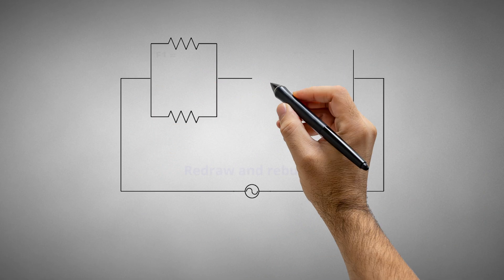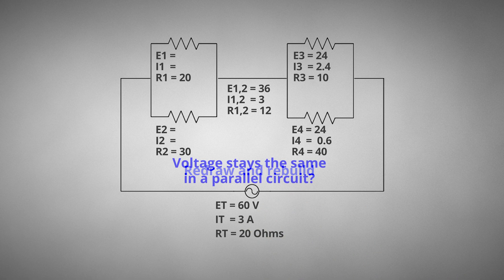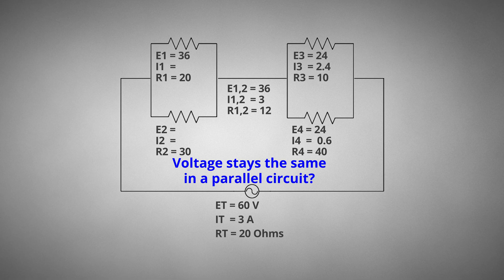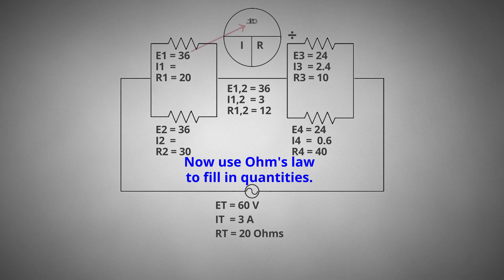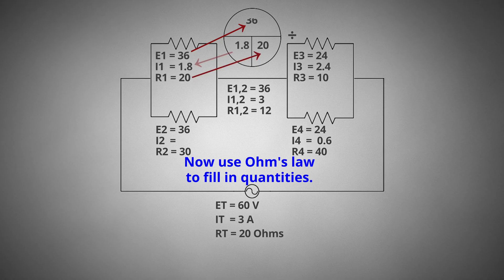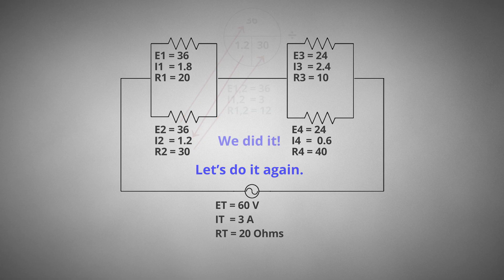Redraw and rebuild. Continue to fill in quantities and identify the circuit to use the right rule. Voltage stays the same in a parallel circuit. Since R1 and R2 are in parallel, both E1 and E2's voltage is 36 volts. Now use Ohm's Law to fill in quantities. 36 volts divided by 20 ohms equals 1.8 amps. 36 volts divided by 30 ohms equals 1.2 amps. We did it!